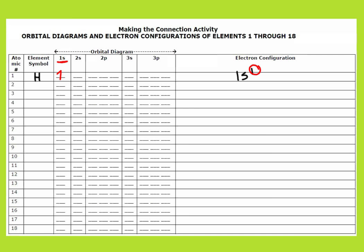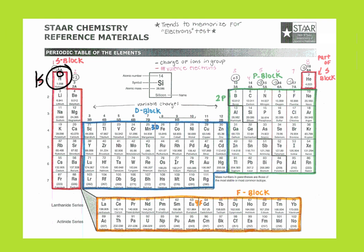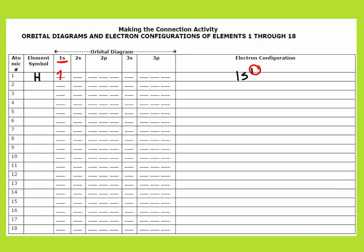Let's look at our next one — atomic number 2. That's across the periodic table; that would be helium. Going back to the making the connection activity, this is He. Its electron configuration is 1s2. It's still in the first energy level, in the S block, but it has two electrons. So I need to represent these electrons with arrows — they are in the 1s region, so up, down. Those are two separate arrows: one facing up, one going down. Remember that Hund's rule says our electrons have to have opposite spins.